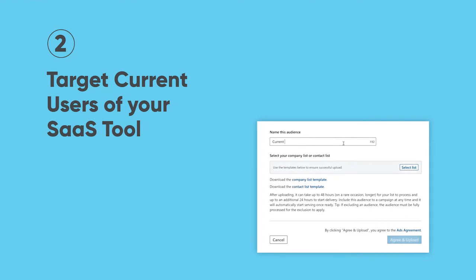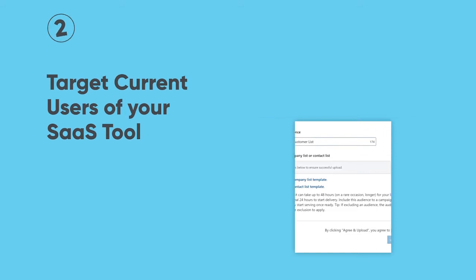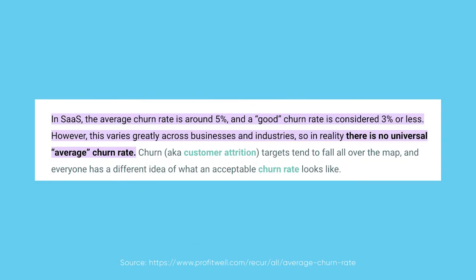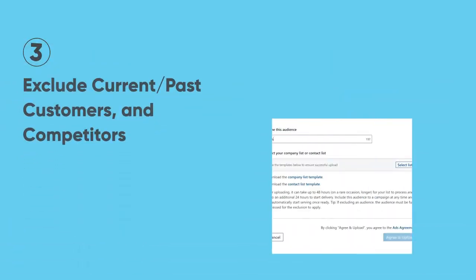Number two is we can target current users of your SaaS tool. We know how important it is when working with SaaS companies to improve churn — it's one of the most challenging metrics we're always facing. That's a great opportunity to target your current customers with ads. You can show them the advancements and the future of the products they're using, and it's a very inexpensive way to get them excited about the product so that when it comes time to re-up their subscription, they're that much more likely to sign on the dotted line.